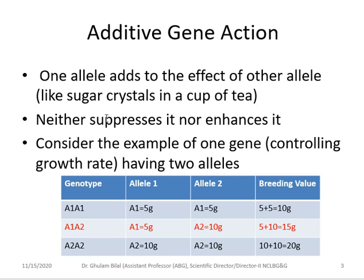Every allele contributes its own effect to the overall breeding value of the animal — it neither suppresses nor enhances; it just contributes its own effect. Consider the example of one gene controlling growth rate in cattle with two alleles, giving three genotypes: a1a1, a1a2, and a2a2. Here a1 contributes 5 grams, so the breeding value for a1a1 is 5 + 5 = 10 grams.